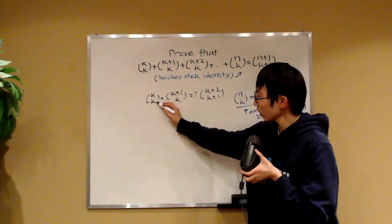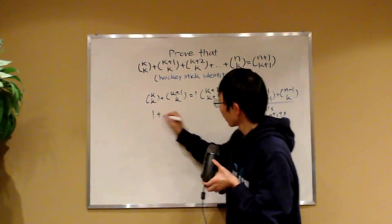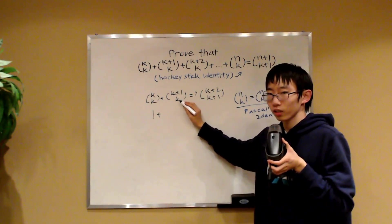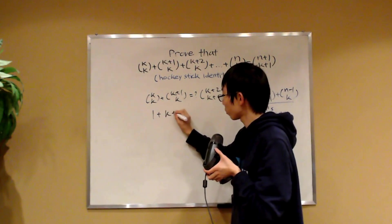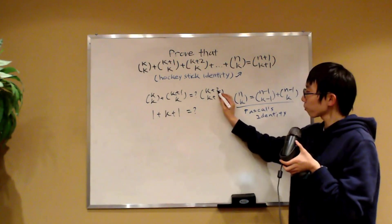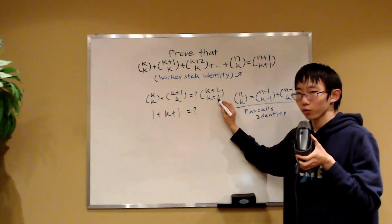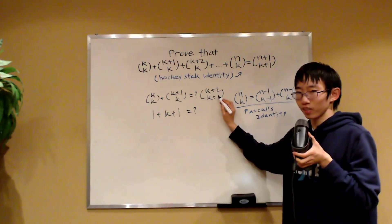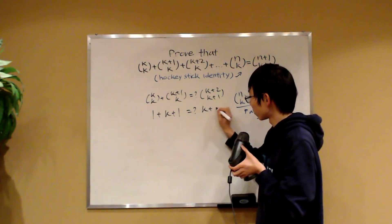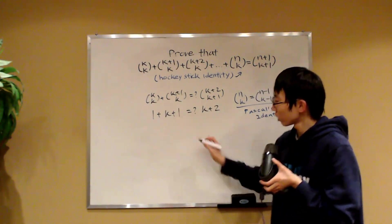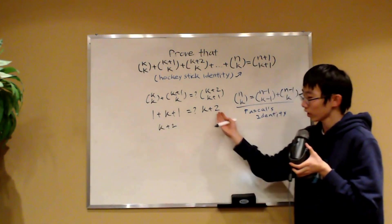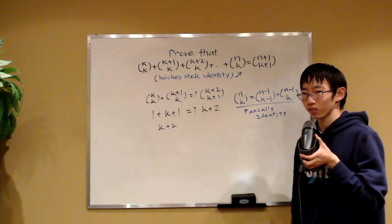So let's prove this. Firstly, k choose k is just 1. And k plus 1 choose k, well, k plus 1 is just 1 more than k, so that's just k plus 1. Now is this equal to this? Well, k plus 2 is just 1 more than k plus 1, so this binomial coefficient just evaluates to k plus 2. And obviously this becomes k plus 2. And, well, the left-hand side and right-hand side are both equal to each other. So we're done.